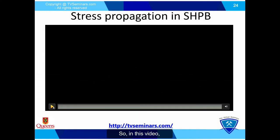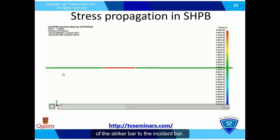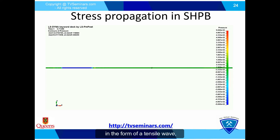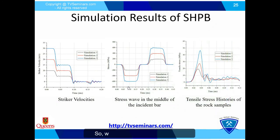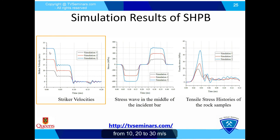In this video you can see a compressional stress wave produced as a result of the impact of the striker bar to the incident bar. The compressional wave has a duration two times the length of the striker bar. Once the wave reaches the rock sample, it partially reflects back as a tensile wave, while also transmitting through the rock sample to the transmitted bar. We conducted three simulations by changing the striker bar velocity from 10, 20, to 30 meters per second.